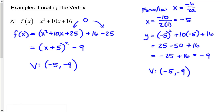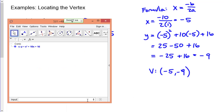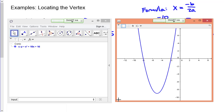Completing the square may be easier without a calculator; the formula can be easier with one. The graph of y = x² + 10x + 16 confirms the vertex is at approximately (-5, -9), the lowest point of the parabola.